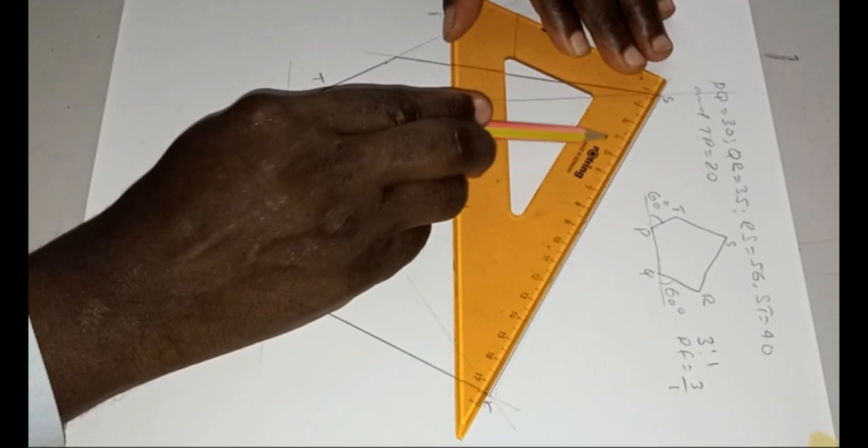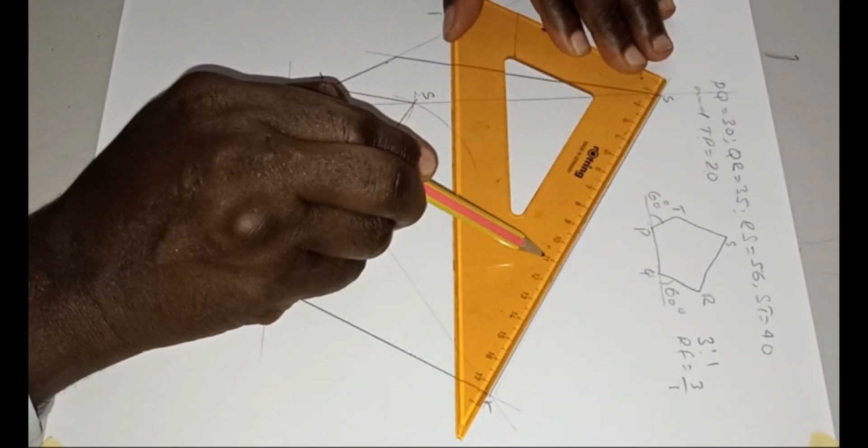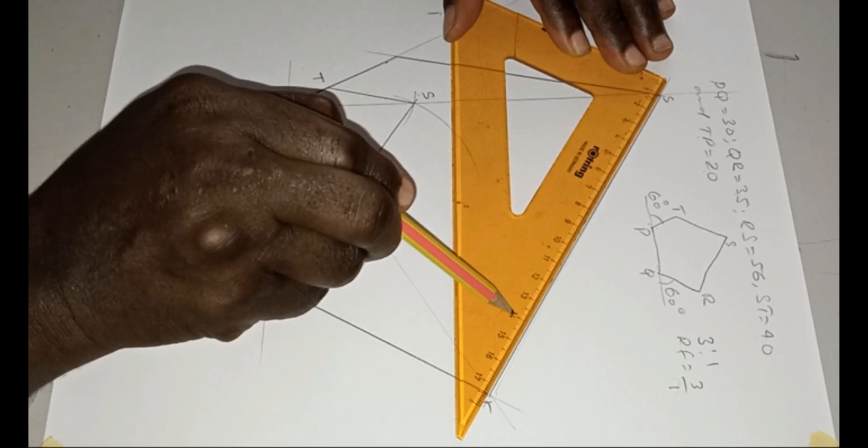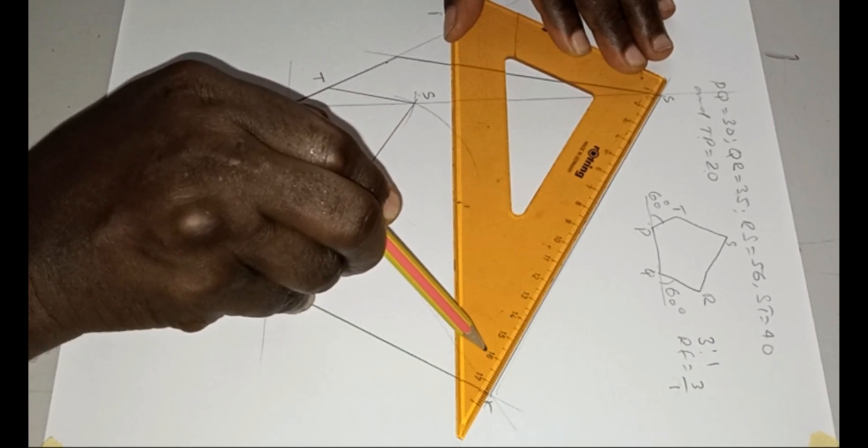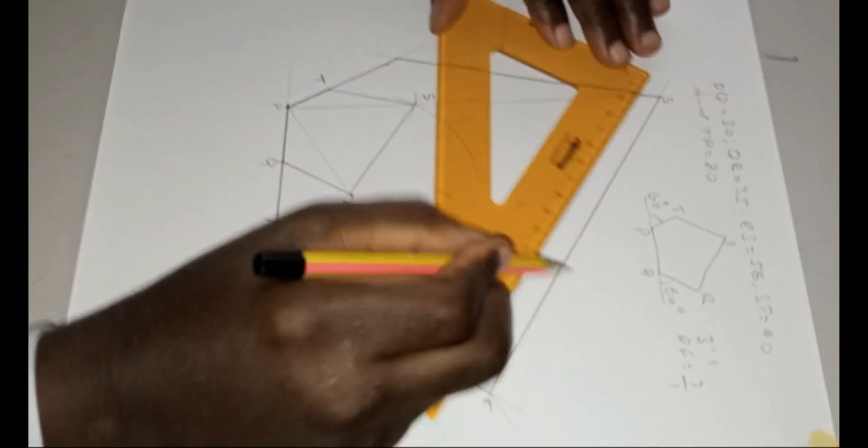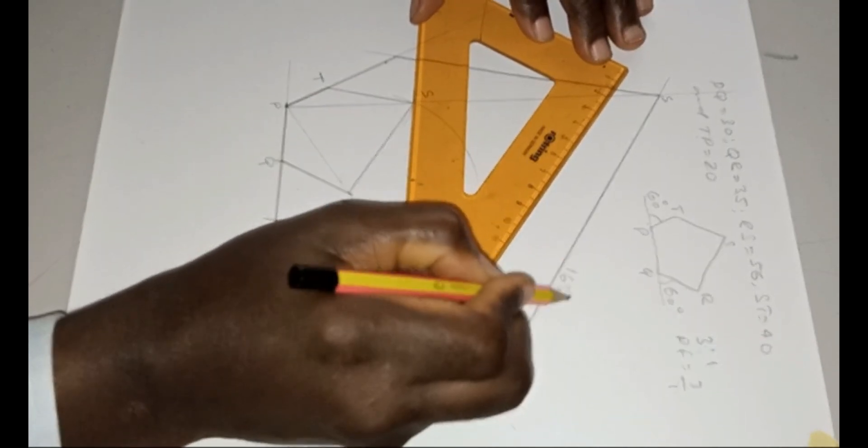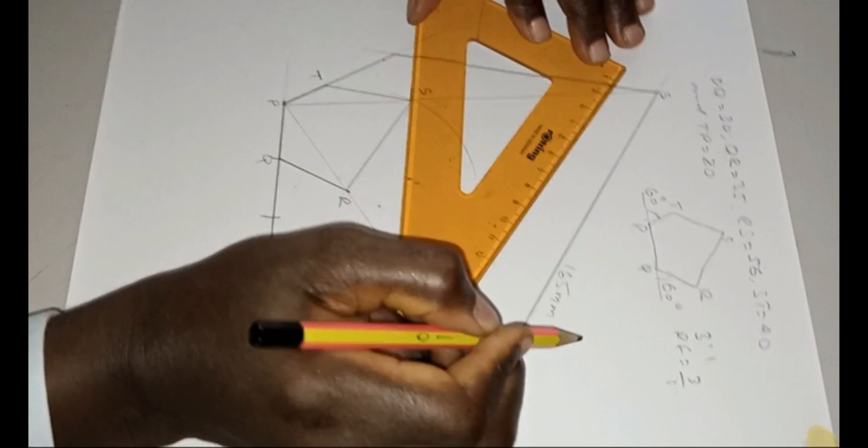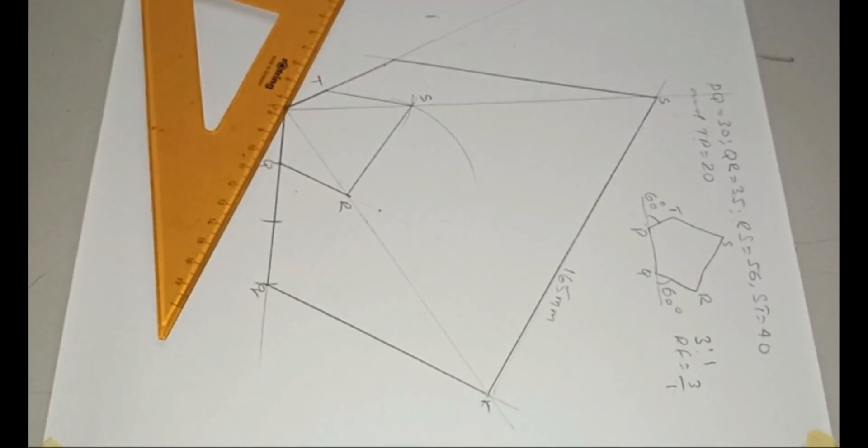10, 20, 30, 40, 50, 60, 70, 80, 90, 100, 110, 120, 130, 140, 150, 165. So 165, and that is the enlarged RS.